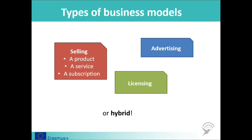The hybrid model is simply a combination of any two or more business models. For example, you might go to the cinema where you will buy a ticket to pay for a service, namely to see a film. Before the main feature, you will see trailers advertising other films to encourage a repeat visit. The cinema ticket may include special promotions or discounts on food or beverages bought on the premises. Thus, as marketing strategies get more sophisticated, hybrid business models are increasingly used.